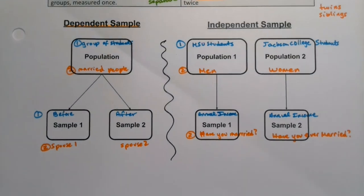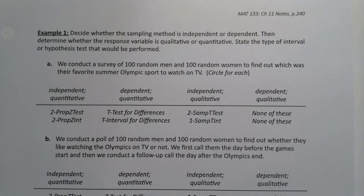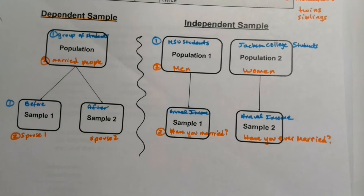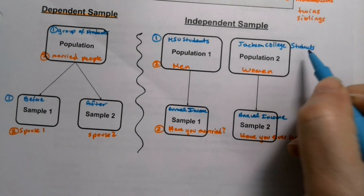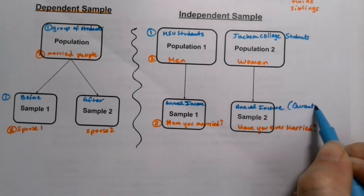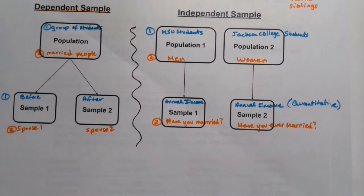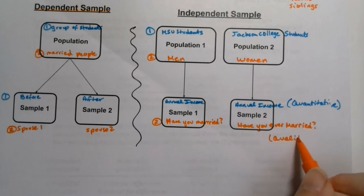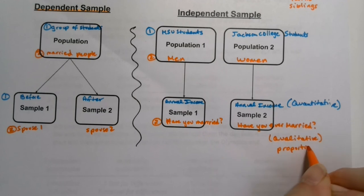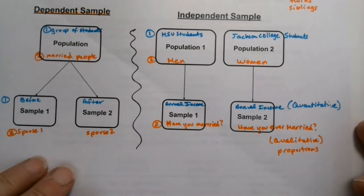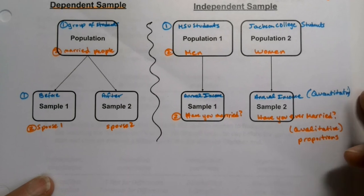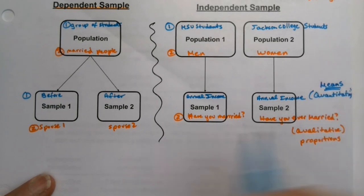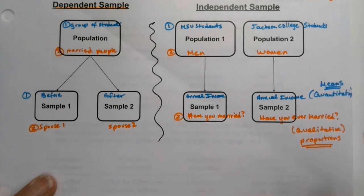Now let's put this into practice. We're going to determine whether the sampling method is independent or dependent, and then determine whether the response variable is quantitative or qualitative. Annual income is quantitative — it's a numerical thing. 'Have you ever been married?' is qualitative because people say yes or no, turning it into a proportion. Qualitative turns into proportions, and quantitative turns into means.